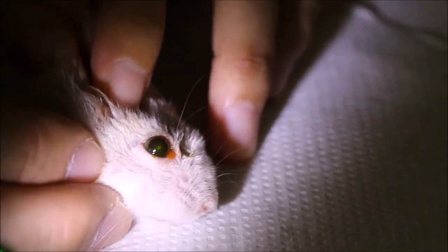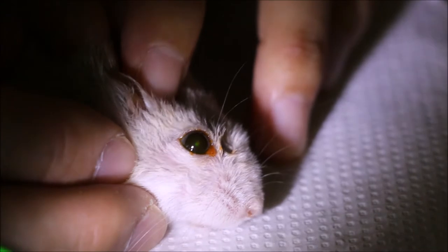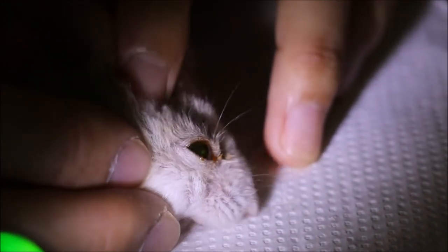Do you notice there's a green spot on a hamster's eye? Why is it there? What does it mean?